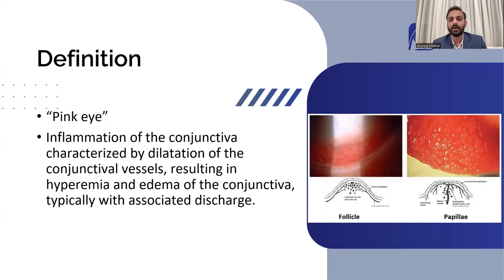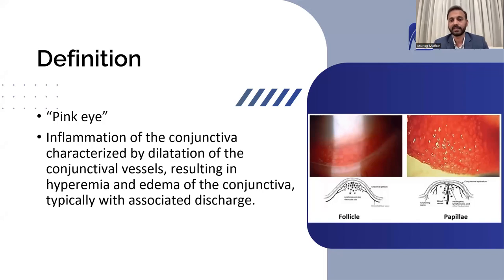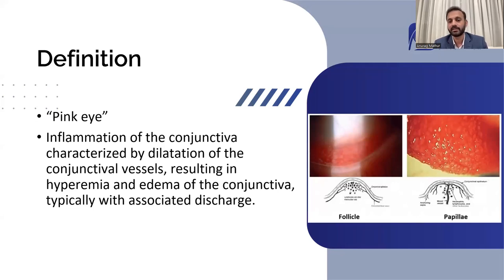On the right side you can see two pictures: one is the depiction of follicles and the second is papillae. Follicles and papillae are the inflammatory responses of conjunctivitis, and the etiology of conjunctivitis decides whether it will be predominantly a follicular or papillary mediated reaction. Mostly in viral conjunctivitis we see follicles more commonly, whereas in bacterial and allergic conjunctivitis, a papillary response is more common.